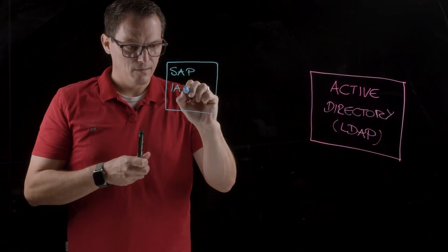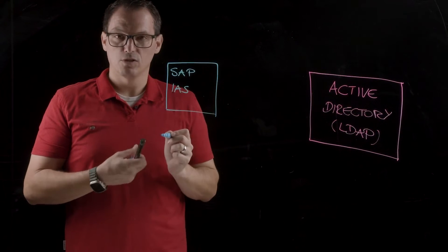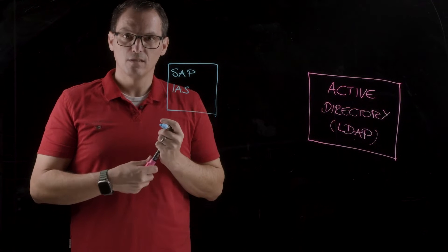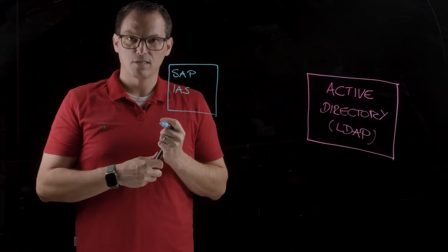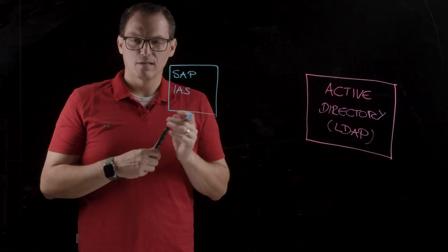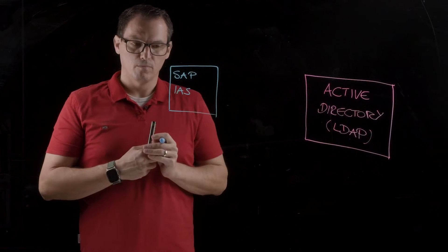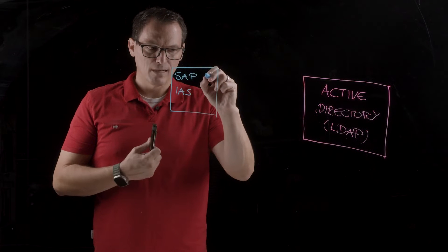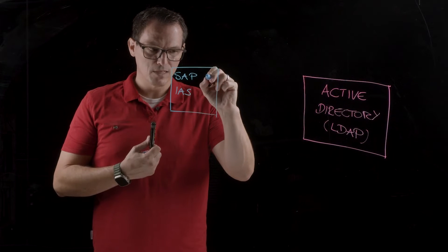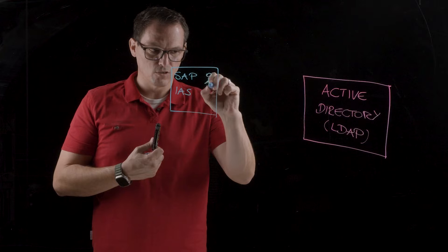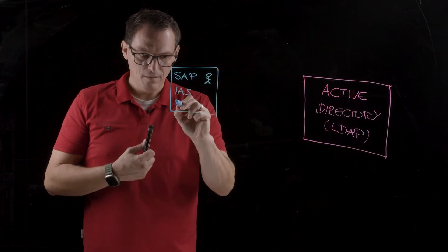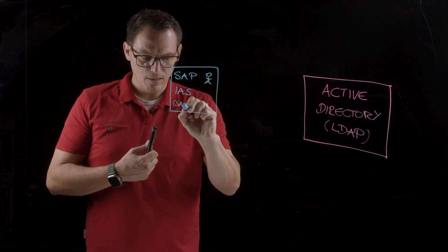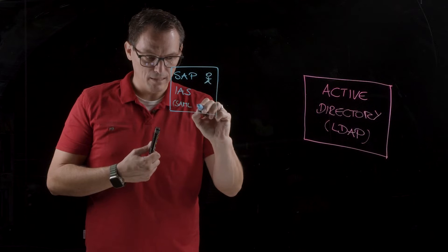You get an instance of this, which is called the Identity Authentication Tenant, and this is provided to you by SAP. So whenever you purchase a cloud license, you will get an IAS. And as you might know from the other expert talks, this is basically doing the user authentication. So the authentication is done here, and it acts as a SAML identity provider, IDP.